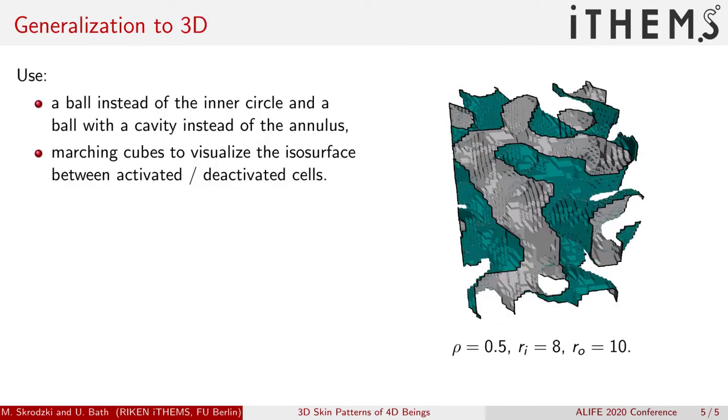We can easily generalize this into 3D when we use a ball instead of an inner circle for the activator, and a ball with a cavity instead of the annulus for the inhibitor morphogen.